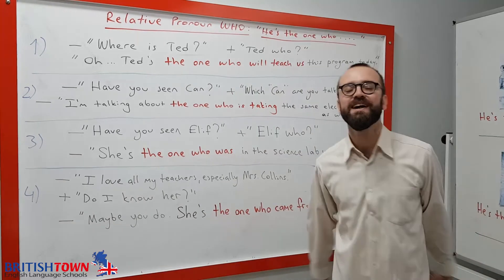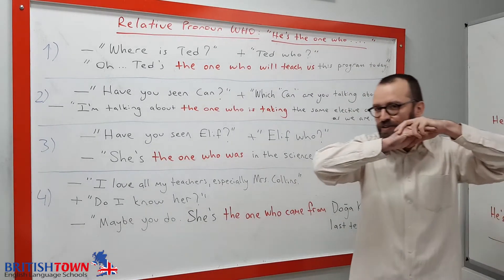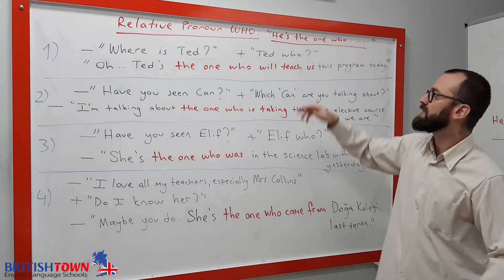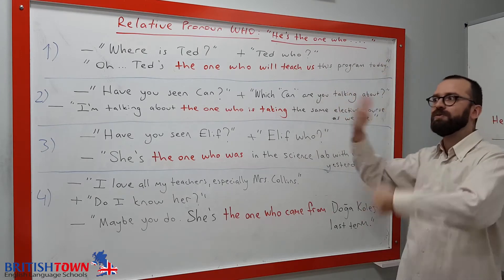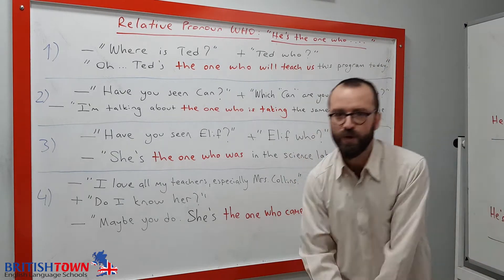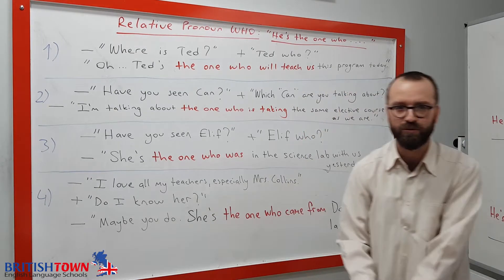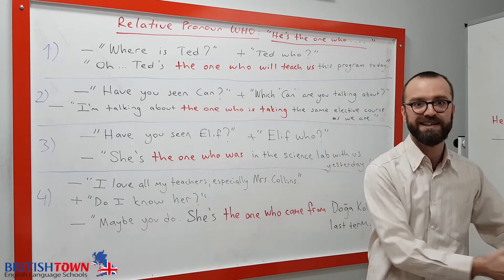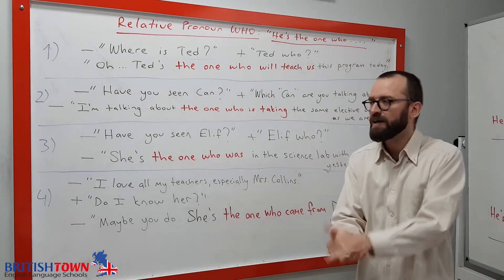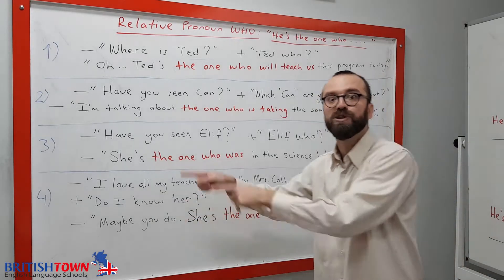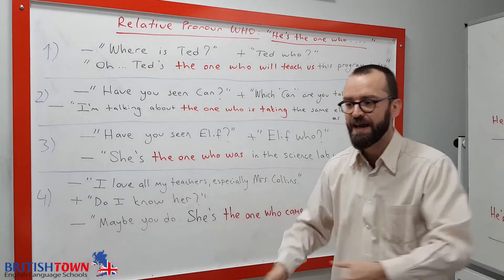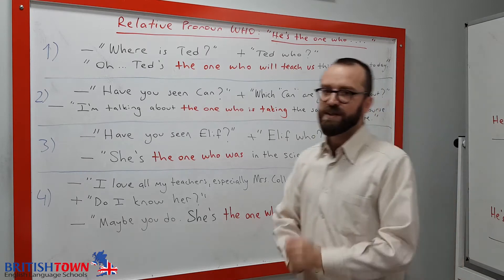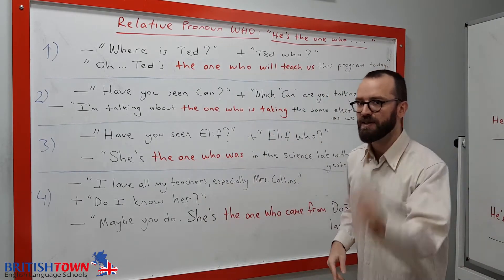Hello everyone! Today we're going to talk about the relative pronoun 'who.' You know 'who' normally means 'kim' in Turkish — like 'who is this?' or 'who gave you this money?' But here we're going to use 'who' as a relative pronoun, meaning 'the person who does something,' giving a pronoun role representing that person.